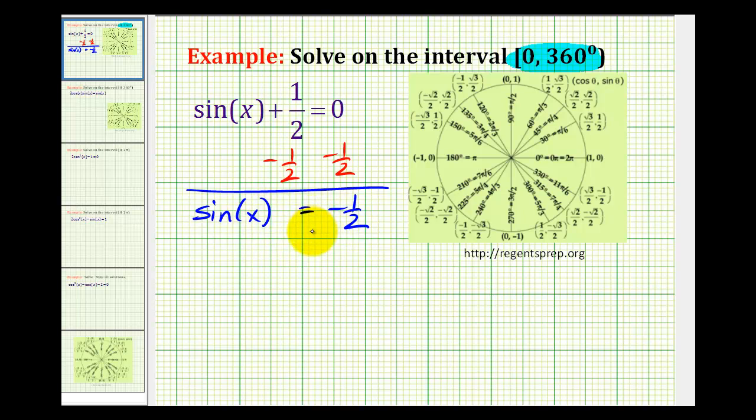And there are a couple ways of doing this. One way is to use a unit circle. We know on the unit circle that sine theta is equal to the y coordinate. So we can work our way around the unit circle looking for y coordinates of negative 1/2.